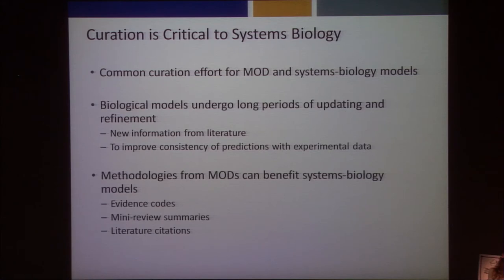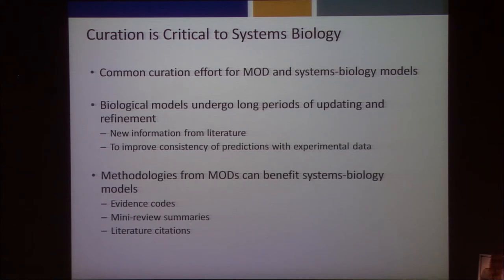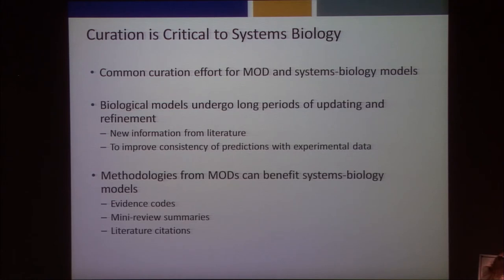One reason is that curation is critical to both model organism databases and systems biology models. It makes sense from an efficiency standpoint to have common curation efforts for both. Models undergo long periods of updating and refinement, just like databases; they integrate curated information from the literature. We need to constantly improve models — changing their reactions, changing what species are involved, and improving the consistency of their predictions with experimental data. The methodologies used in model organism databases, like evidence codes and literature citations for genes, pathways, and reactions, can benefit model building and make models more literate.